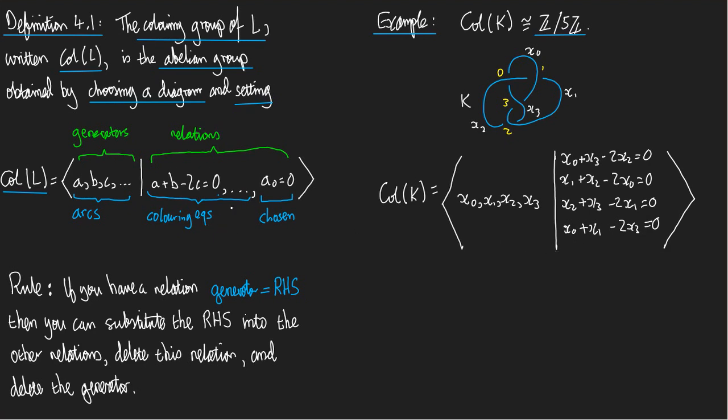So that was the colouring equations. And then we need to put in the equation for our chosen arc. So let's choose x0. x0 equals 0. There we are. So that's our presentation of our colouring group. Now, there's a rule we're going to use that's helpful for us. It's down here on the bottom left.